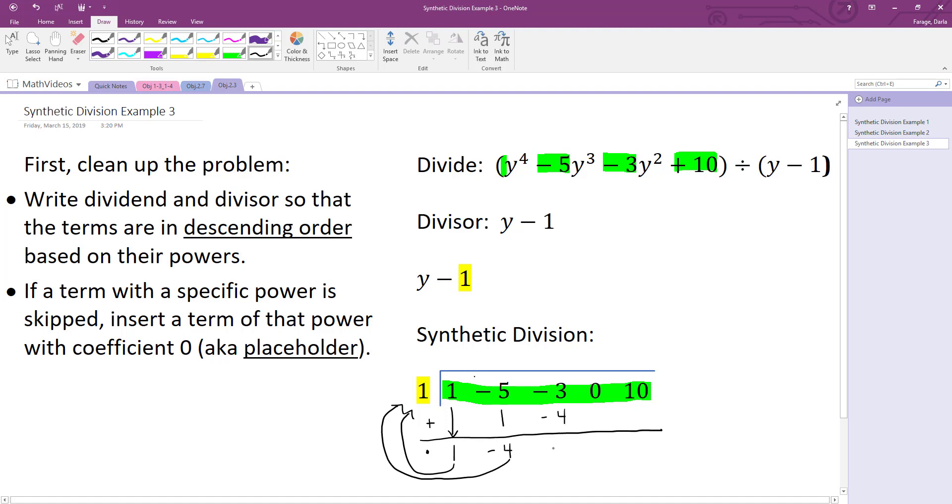Combine negative 3 and negative 4, you get negative 7. Take your negative 7 and multiply it by a. Negative 7 times 1 is negative 7. Combine that with my 0, I get negative 7.